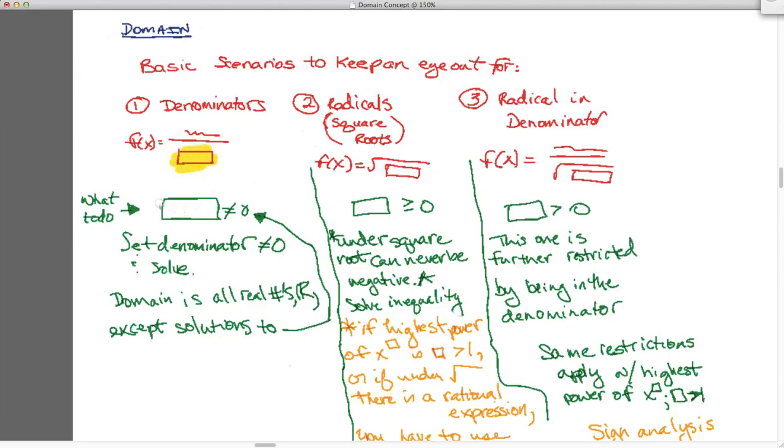and you want to set it not equal to zero and solve. And your domain is going to be all the real numbers out there except for the solutions to this denominator. So in essence, where it equals zero is where your domain cannot be. You cannot plug in a number that makes that bottom equal to zero.